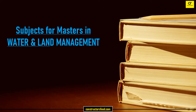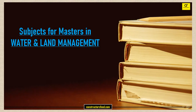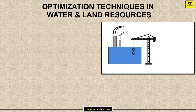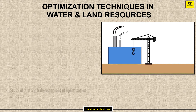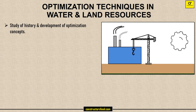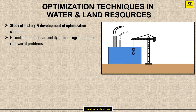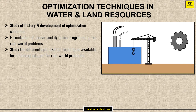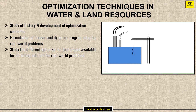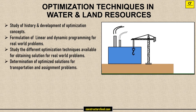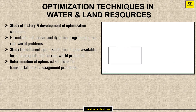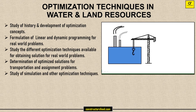Subjects for Masters in Water and Land Management. Optimization Techniques in Water and Land Resources: Study of History and Development of Optimization Concepts; Formulation of Linear and Dynamic Programming for Real World Problems; Study of Different Optimization Techniques for obtaining solutions for Real World Problems; Determination of Optimized Solutions for Transportation and Assignment Problems; Study of Simulation and Other Optimization Techniques.